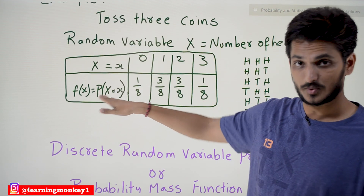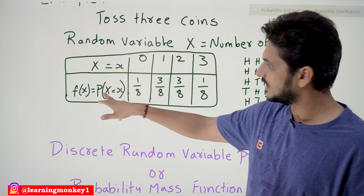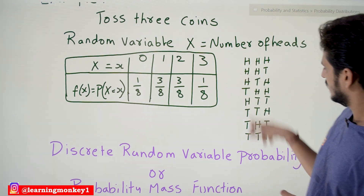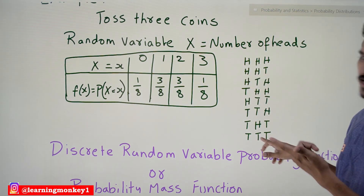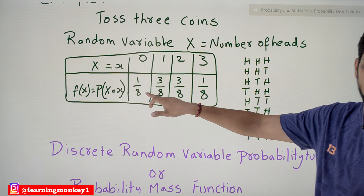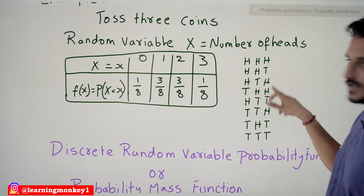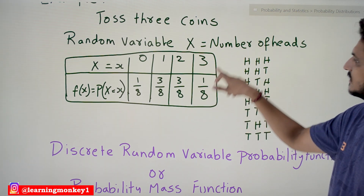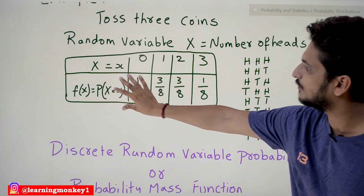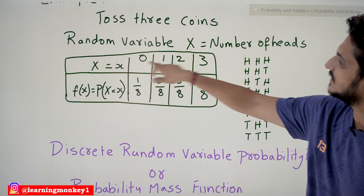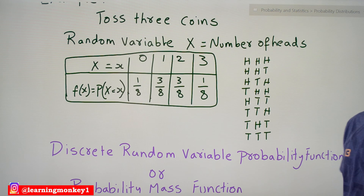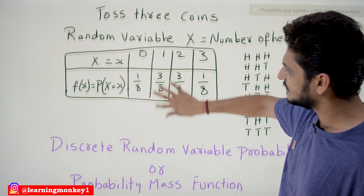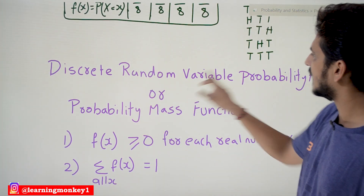The function f(x) provides the probability values for the random variable. Zero heads is possible only by tail-tail-tail — one possibility out of eight, so probability is 1/8. One head is possible by three chances: 3/8. Two heads are possible by three chances: 3/8. Three heads: 1/8. These are all the probability values for the discrete random variable X. This we call the probability distribution.